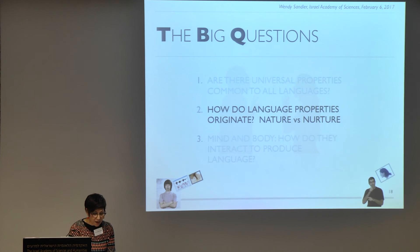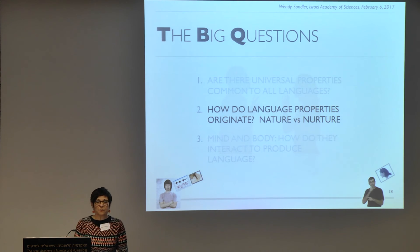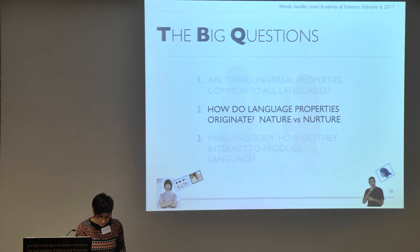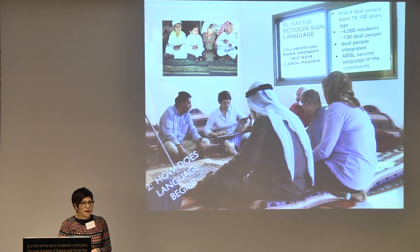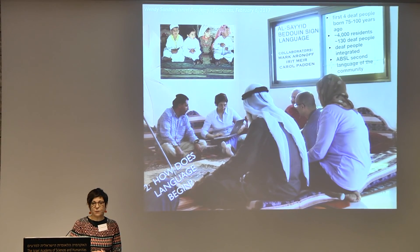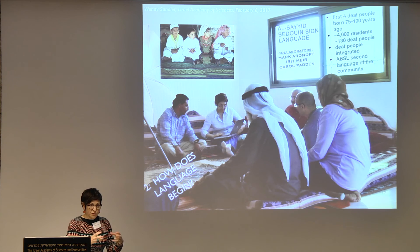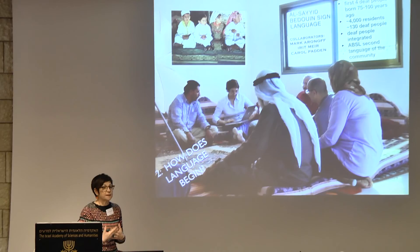The second big question is how do language properties originate? We're interested in questions of innateness — how much is pre-specified in the human brain — and questions of culture — how much arises through interaction among people over time. One way to address this is by looking at new sign languages. You can't do this with spoken languages, because all spoken languages are thousands of years old or descended from old languages. But sign languages can arise overnight: as soon as you have a group of deaf people together with an opportunity to communicate regularly, a sign language arises.